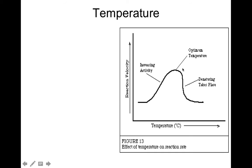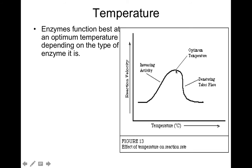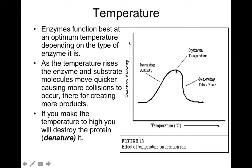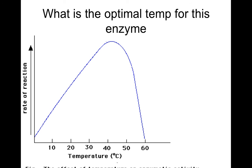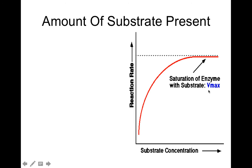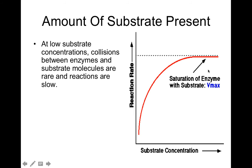Same thing with temperature — here's another good graph showing how fast the reaction is happening versus temperature. As the temperature increases past the optimum, you can see it's not going to work as well and will go slower. The optimum temperature for this enzyme is right about 42 to 43 degrees. For substrate concentration, the more substrate there is, the rate of reaction is going to kind of level off as you see on this graph.